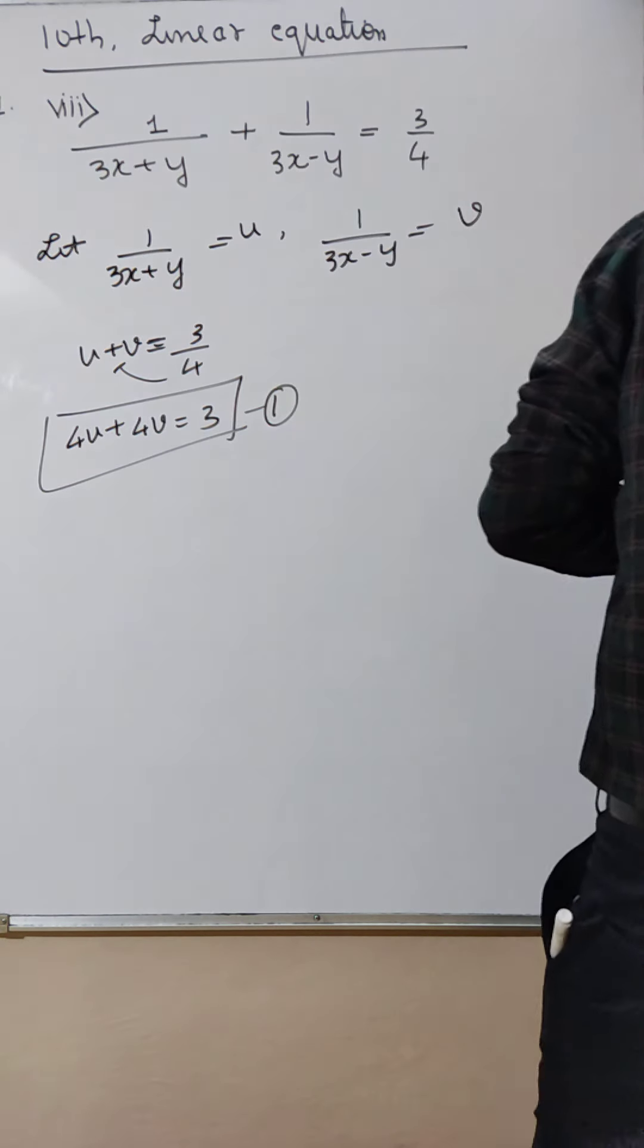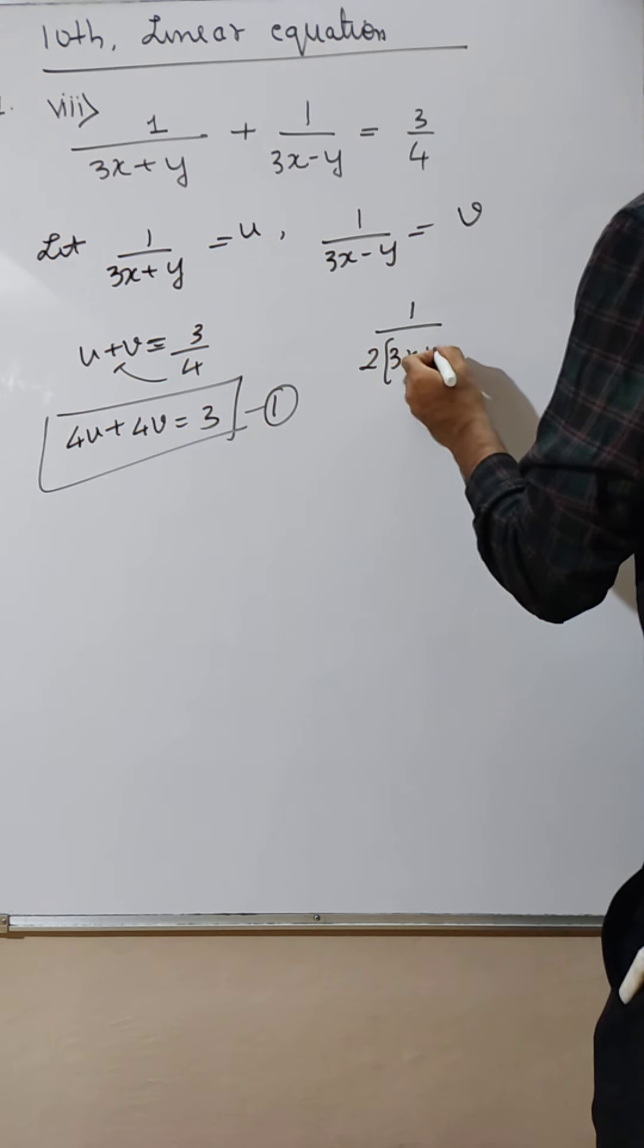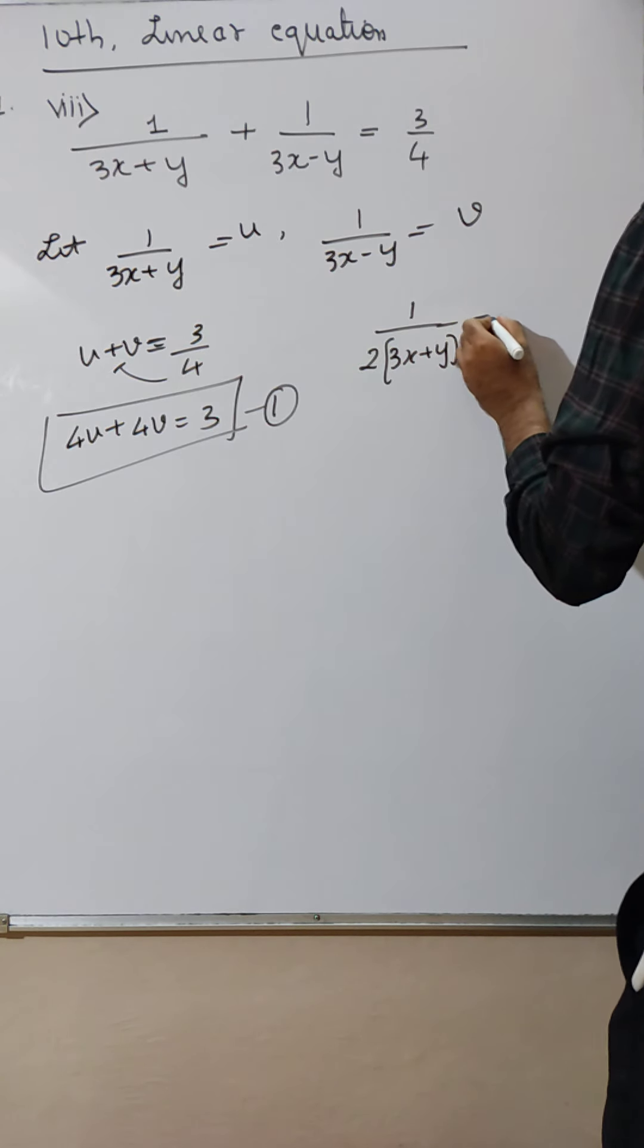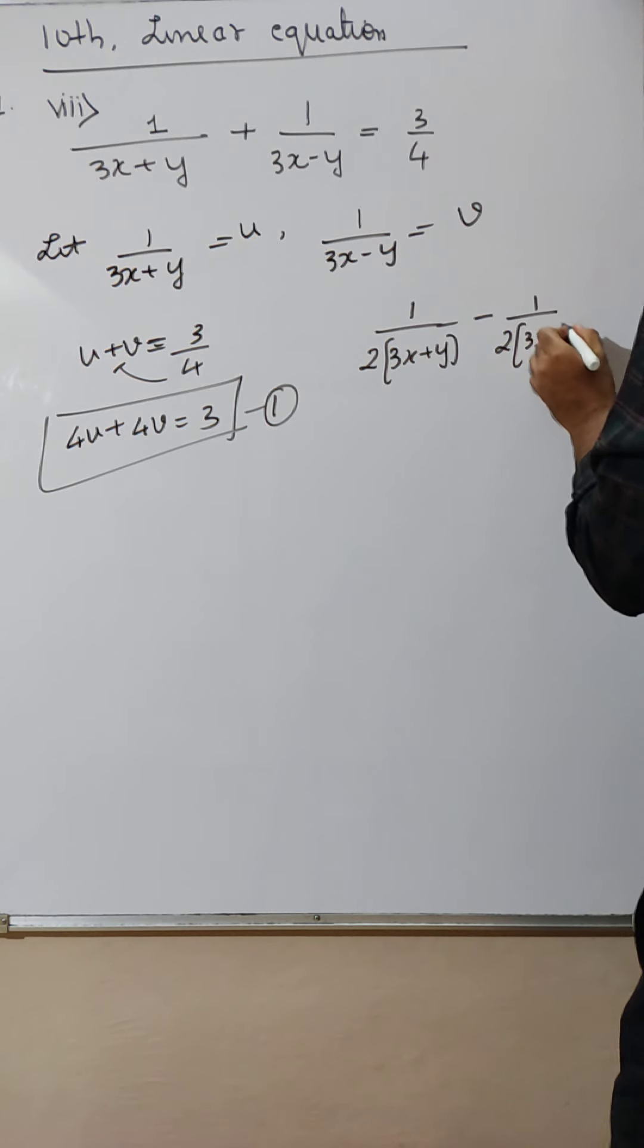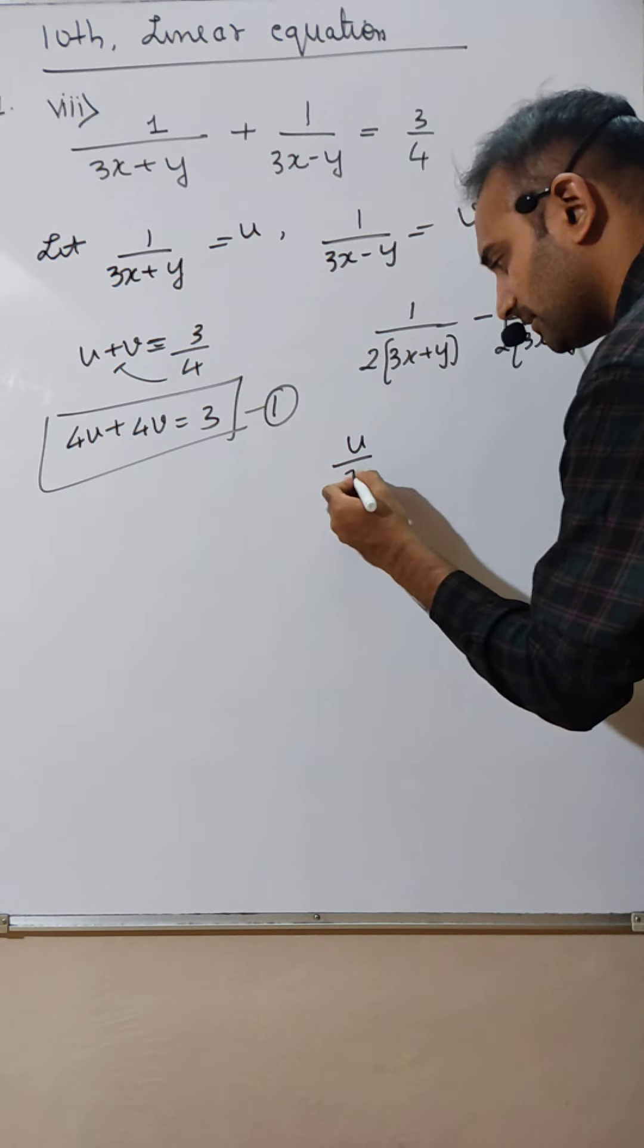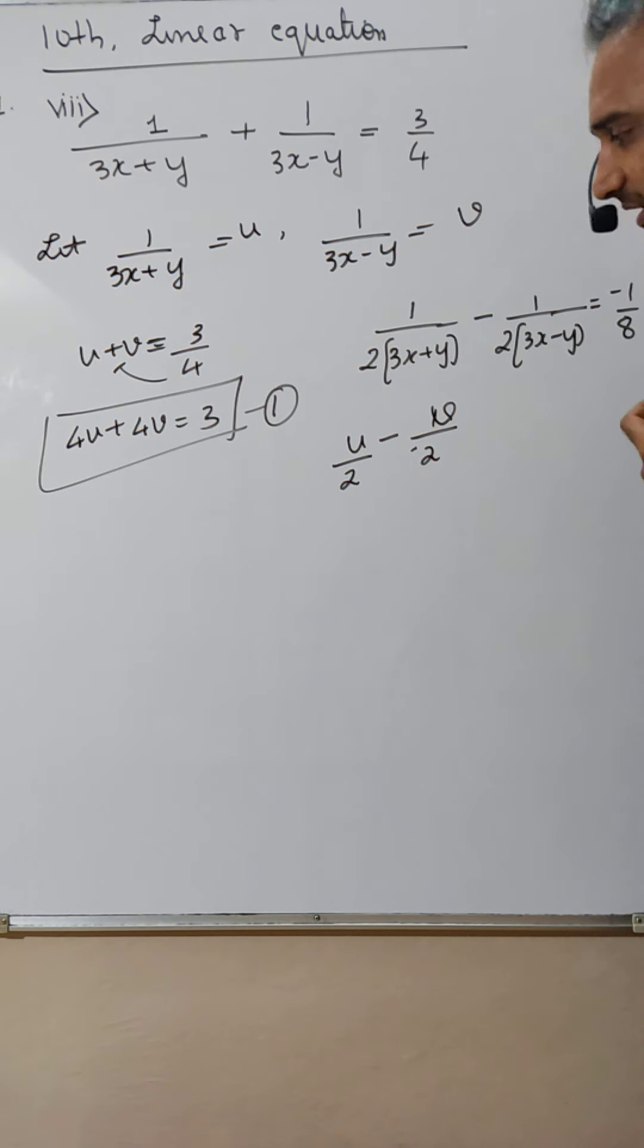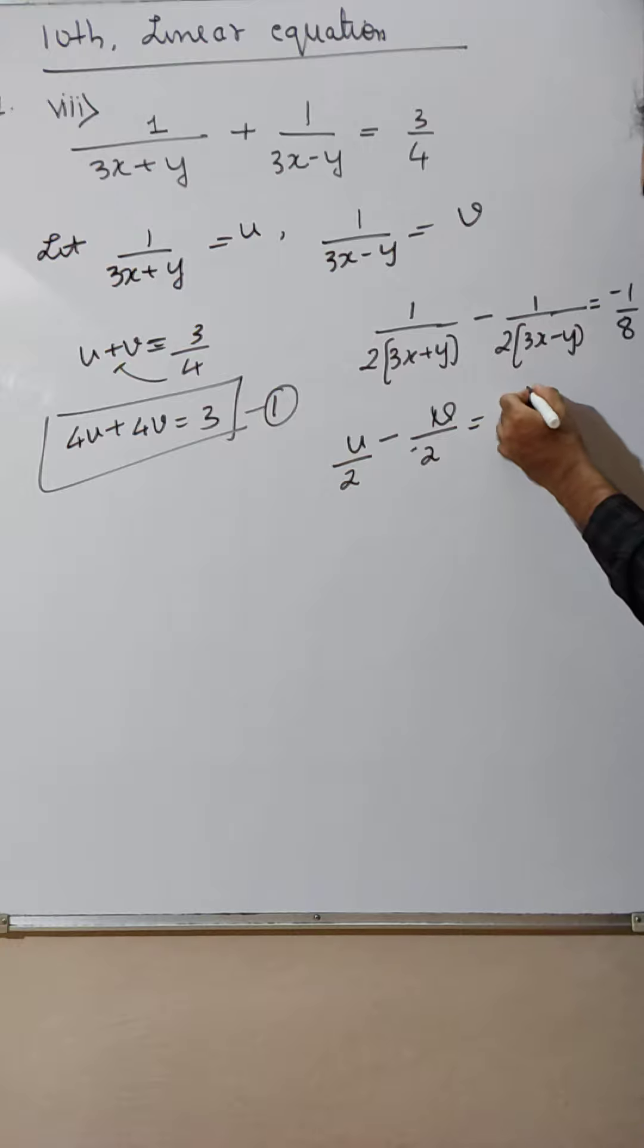Next, come this side. 1 divided by 2 bracket 3x plus y minus 1 divided by 2 bracket 3x minus y is equal to minus 1 by 8. This is thought as tricky, that is why I said I did it. u divided by 2 minus v divided by 2. Let me repeat slowly: 1 divided by 3x plus y is u, u over 2, minus sign, 1 divided by 3x minus y is v, v over 2, is equal to minus 1 by 8.